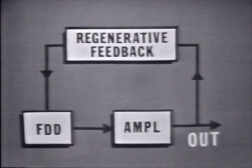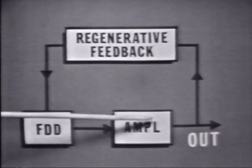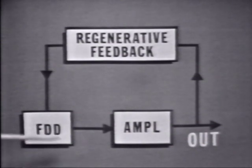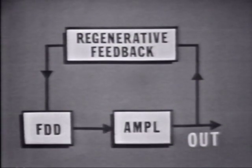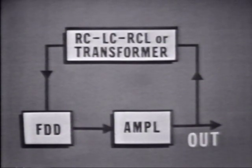Now the way this is usually accomplished is through an amplifier. The frequency determining device provides an input to the amplifier. The amplifier must provide enough gain so that part of the output can be fed back to the input LC circuit to sustain oscillations, and of course provide enough signal for an output. Now the energy must be fed back in phase — or regenerative. Because many amplifiers shift the phase of the signal by 180 degrees, phase shifting networks may be required in the feedback path. Various methods are used: RC, LC, RCL, or transformer between the output and the input.